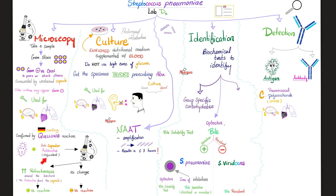Slide it under the microscope and look. Did you see increased refractiveness around the bacteria? It means that your antibodies recognized the capsule that surrounds the bacteria. That's why you see increased refraction around the bacteria — a positive Quellung reaction confirming this was Streptococcus pneumoniae.